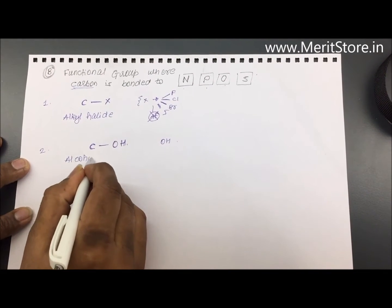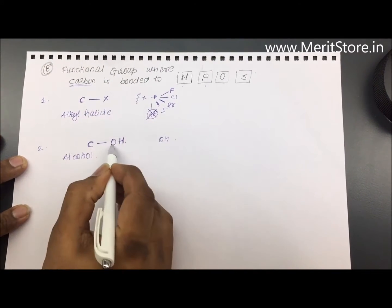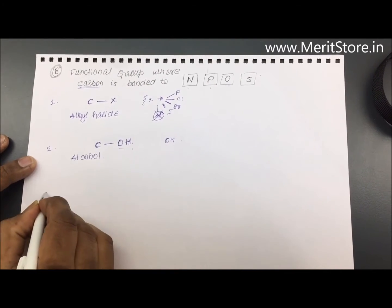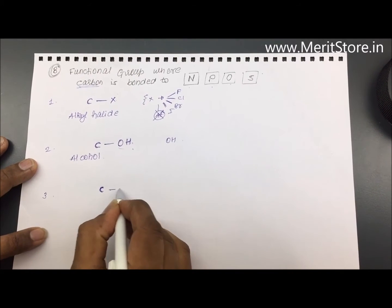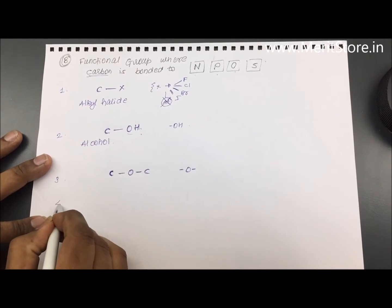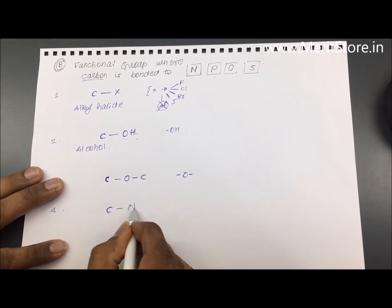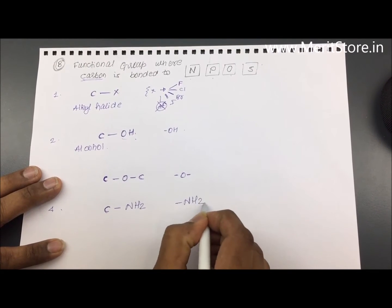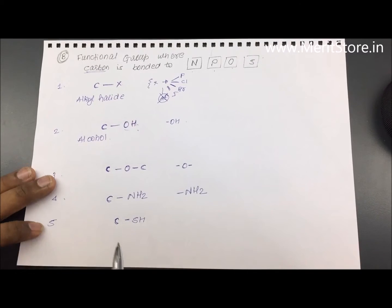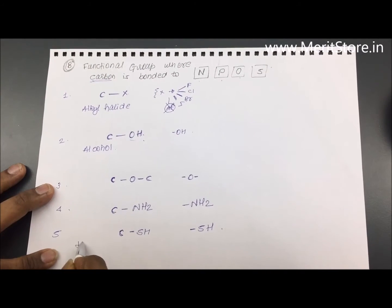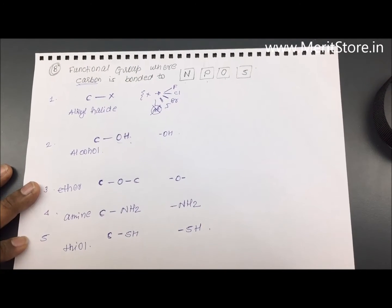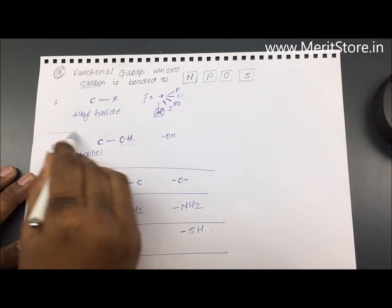The second is when carbon is attached to OH — the alcoholic group — so we call this alcohol. Remember, functional group is an atom or a group of atoms connected to carbon. The third is when the carbon atom is connected to oxygen — that oxygen is your functional group, forming an ether. Next, carbon connected to NH2 gives you an amine, and carbon connected to SH gives you a thiol.